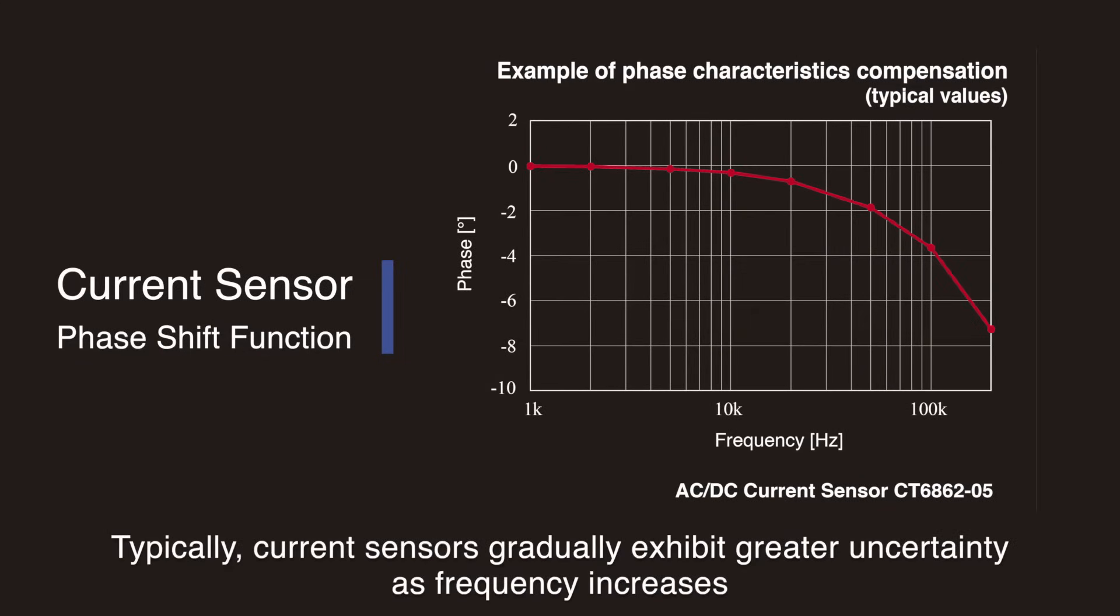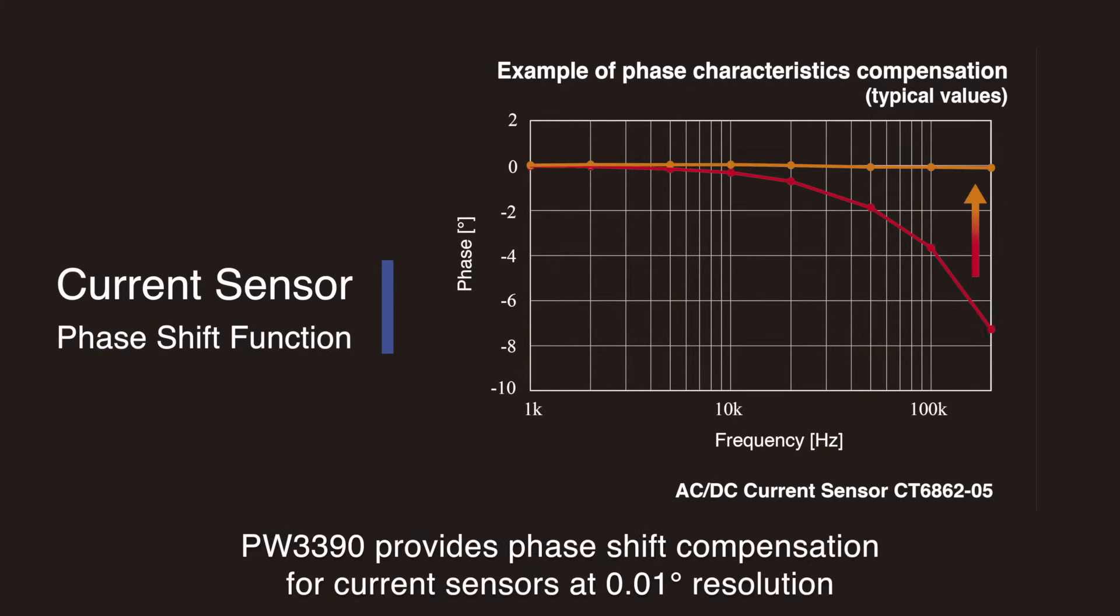In typical situations, current sensors will gradually exhibit greater uncertainty as the frequency increases. However, the PW3390 provides phase shift compensation for Hioki current sensors at a 0.01 degree resolution.